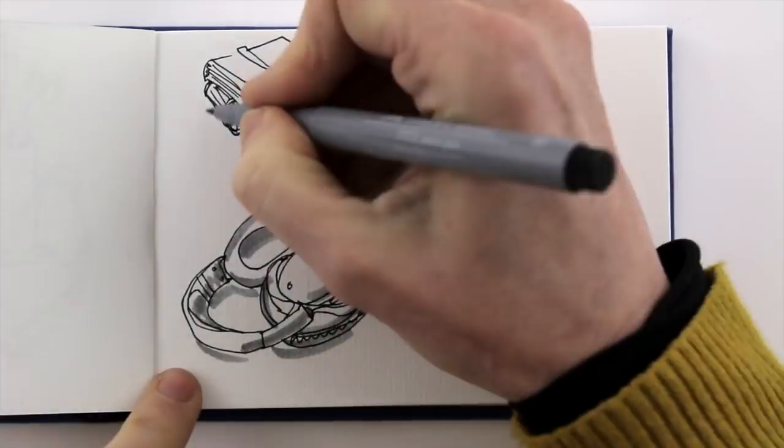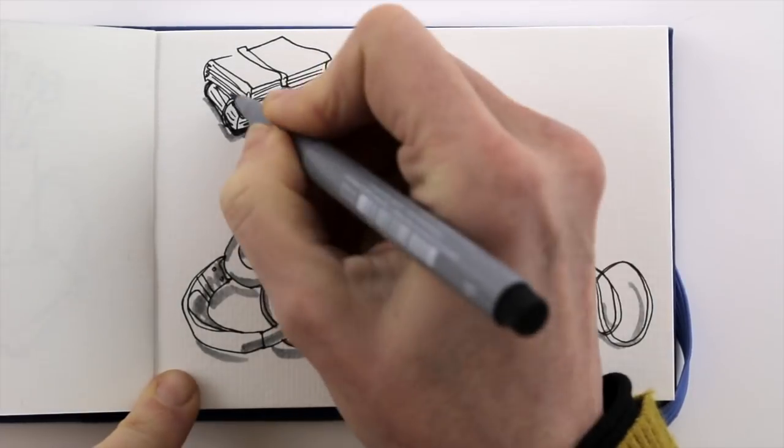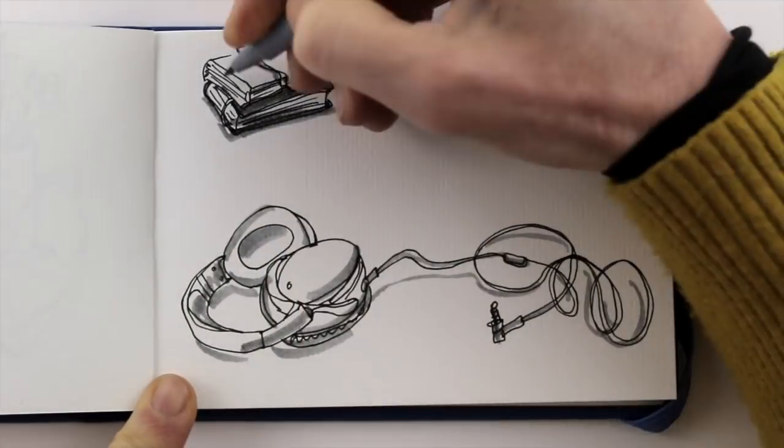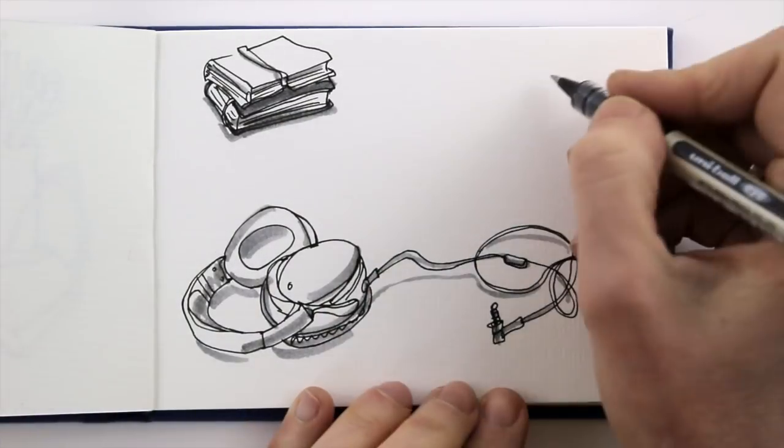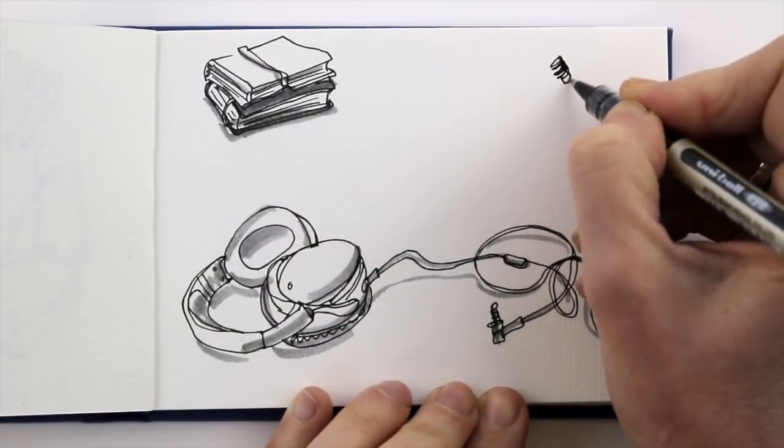I'm just drawing stuff lying around, things that have an interesting shape or seem a little challenging to draw. I'm keeping it loose, and just place them randomly on the page.